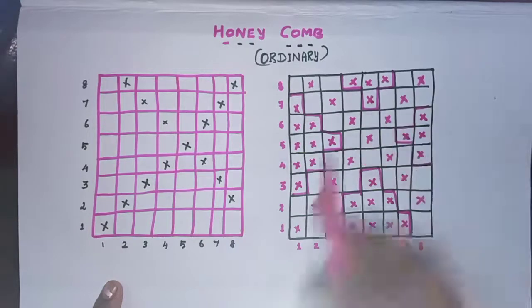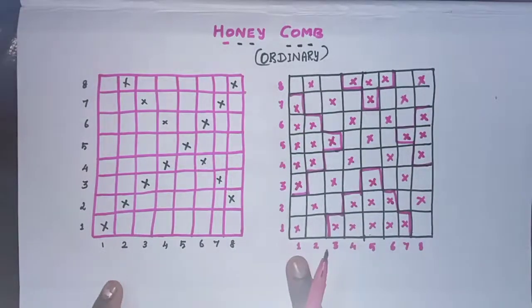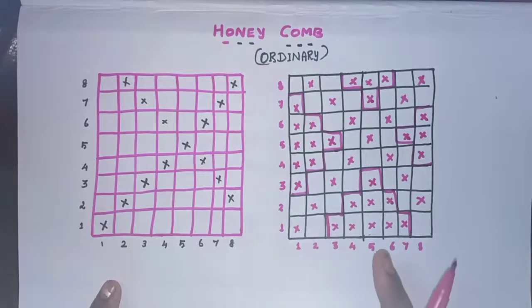This is a pattern. So this complete repeat is an ordinary honeycomb weave. The next class we will discuss about the brightened honeycomb weave. Thank you.